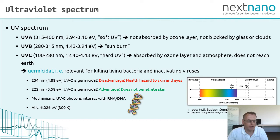UVC radiation is germicidal. That is, it's relevant for killing living bacteria and inactivating viruses. The mechanism is that the UVC photons interact with RNA and DNA and destroy it. For instance, radiation at 254 nanometers is germicidal and has the disadvantage that it's a health hazard to humans for skin and eyes.